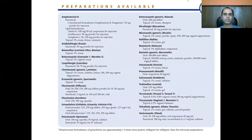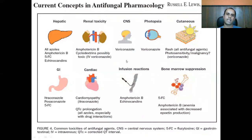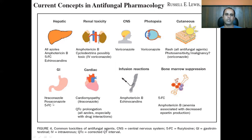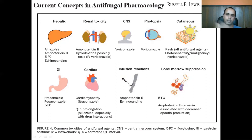A chart shows different formulations of different antifungal drugs available in the market. Regarding drug toxicity: hepatic toxicity is seen with all azoles, amphotericin B, flucytosine, and echinocandins. Renal toxicity is the classic picture seen with amphotericin B. CNS toxicity and eye toxicity are seen with voriconazole. GI toxicity can be seen with itraconazole, posaconazole, and flucytosine. Cardiac toxicity with itraconazole. Amphotericin B and echinocandins can cause infusion-related reactions by releasing TNF-alpha and interleukins. Flucytosine can cause bone marrow suppression.